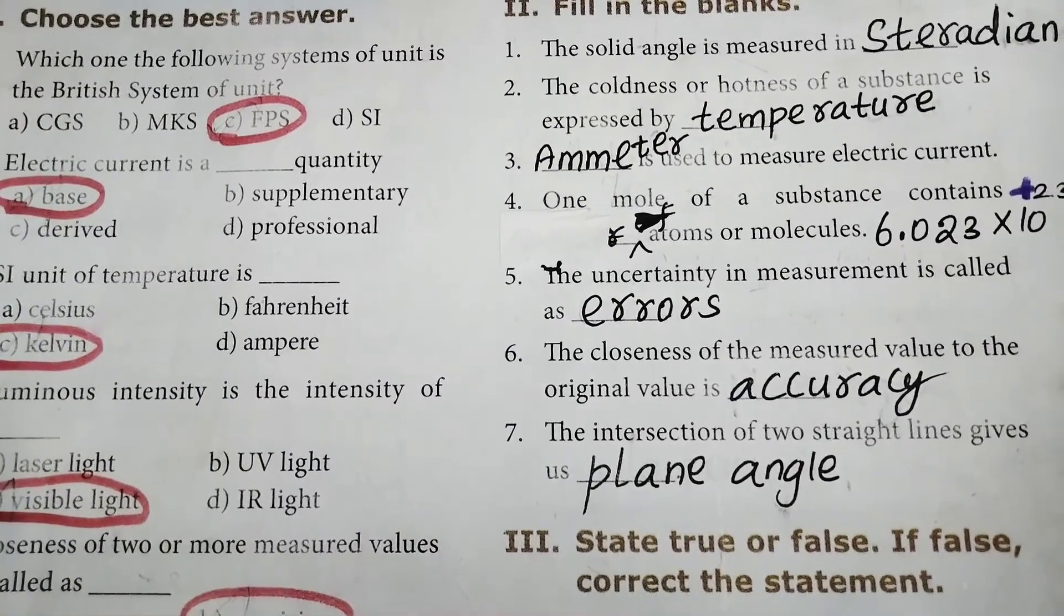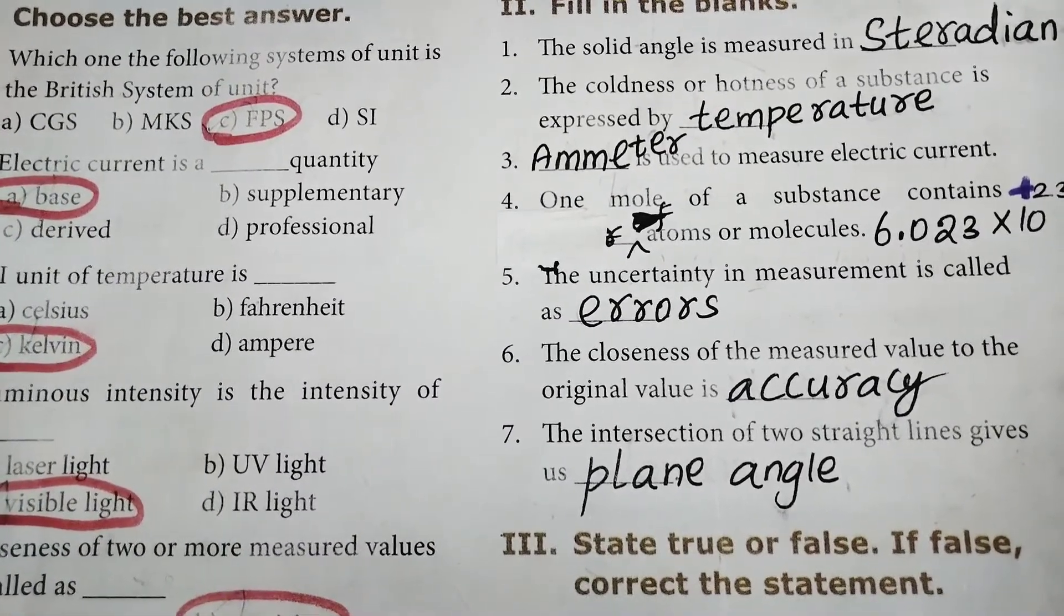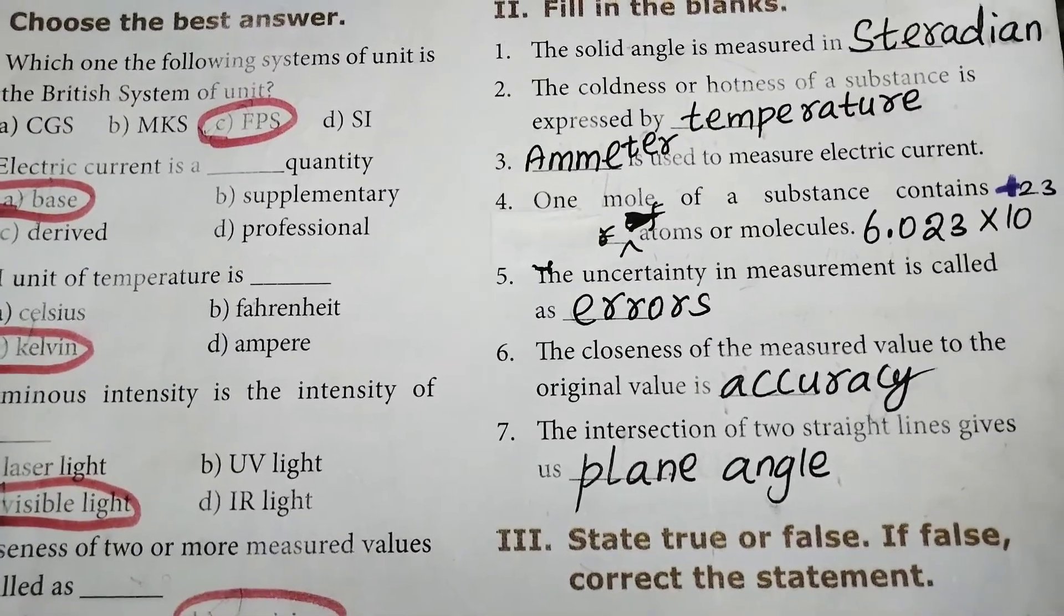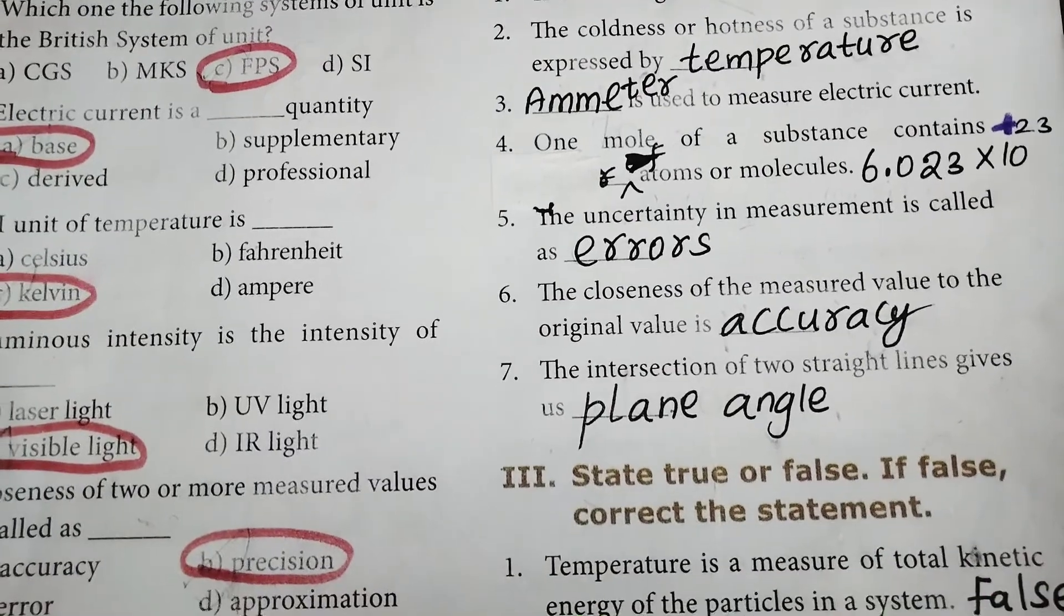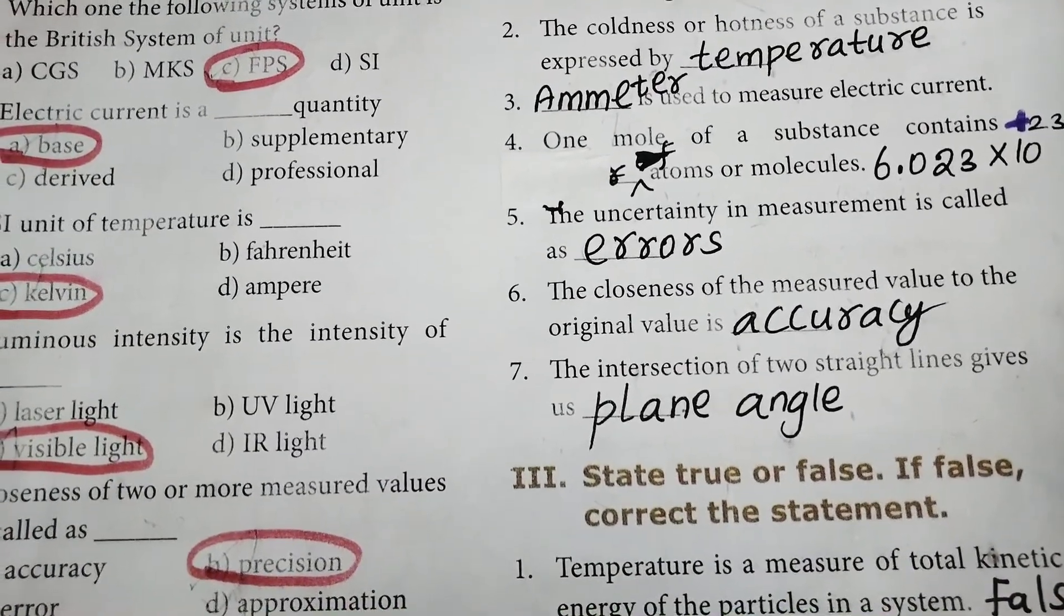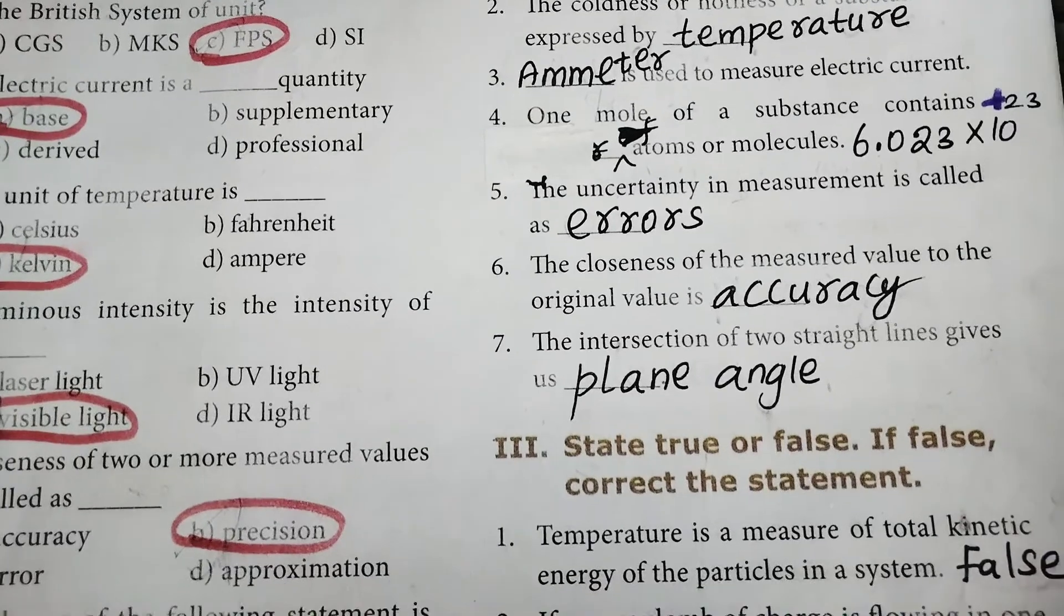Sixth one, the closeness of the measured value to the original value is accuracy. Seventh one, the intersection of two straight lines gives us plane angle.